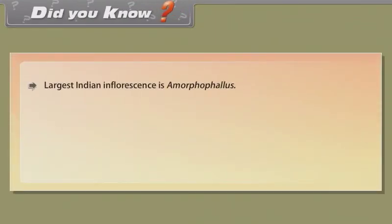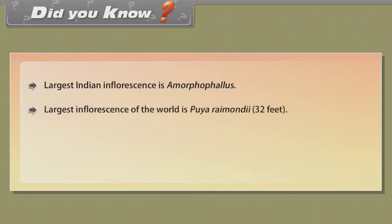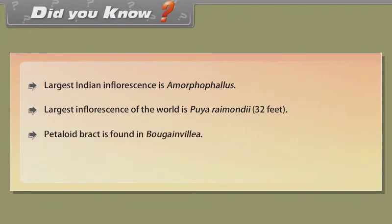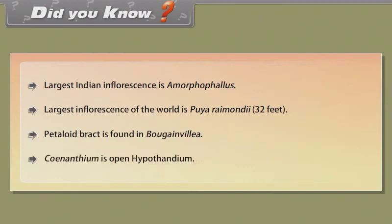Did you know? The largest Indian inflorescence is Amorphophallus. The largest inflorescence in the world is Puya raimondii at 32 feet. Petaloid bracts are found in Bougainvillea. Synanthium is an open hypanthodium.